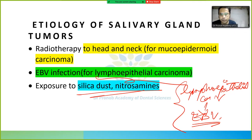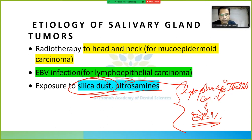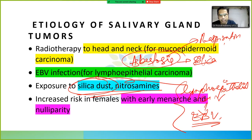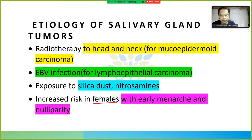Exposure to silica dust and nitrosamines is also a cause of salivary gland tumors. Silica dust is associated with asbestosis, studied in respiratory pathology. Salivary gland tumors also have increased risk in females with early menarche and nulliparity.